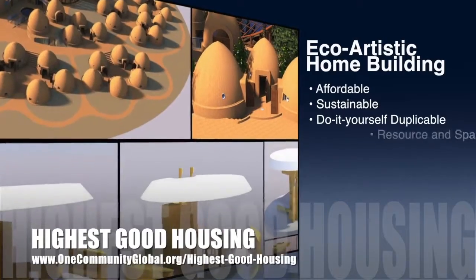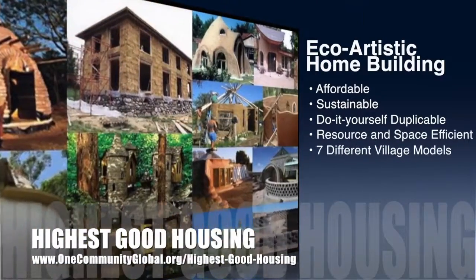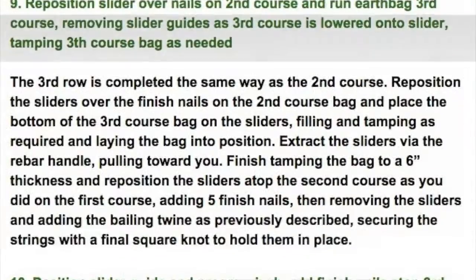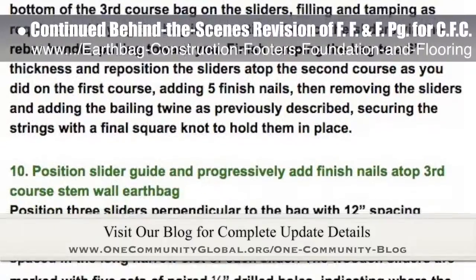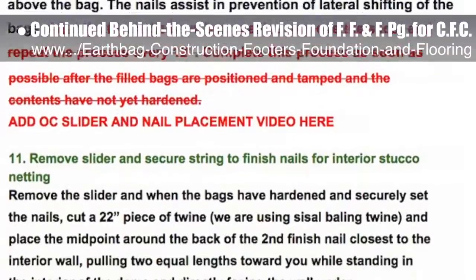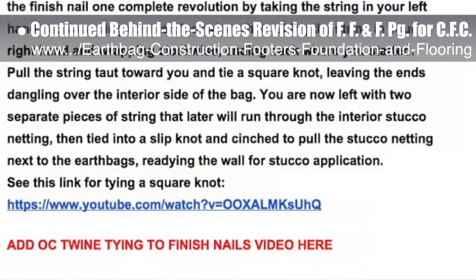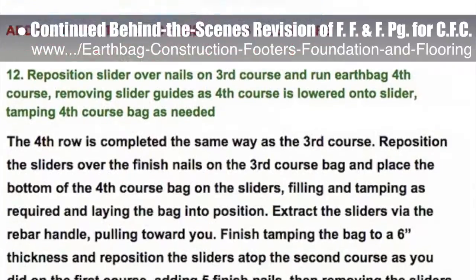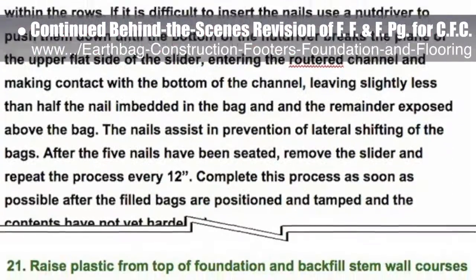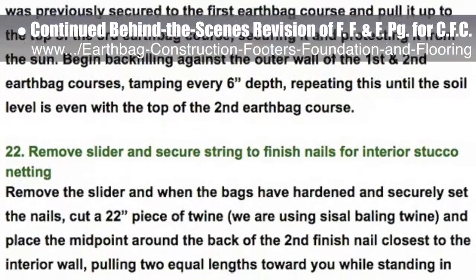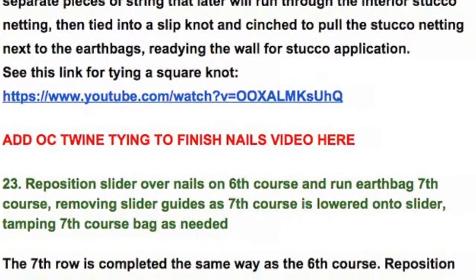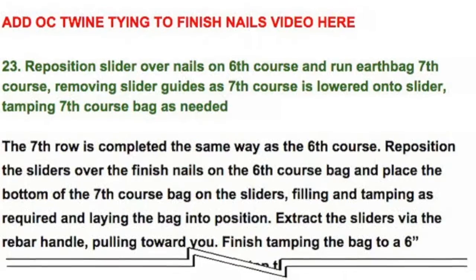One Community's approach to highest good housing is eco-artistic home building that is affordable, sustainable, do-it-yourself, duplicable, resource and space efficient, consisting of seven different sustainably constructed village models. This last week the core team put another 10 hours into the behind-the-scenes revision for the footers, foundations, and flooring page for the crowdfunding campaign. This week's focus was on editing and creating narratives for additional green step headings of section 10 — construction of stem wall and dome. We combined multiple entries into single entities and realigned others; we are now 85% complete with this total update and rewrite.